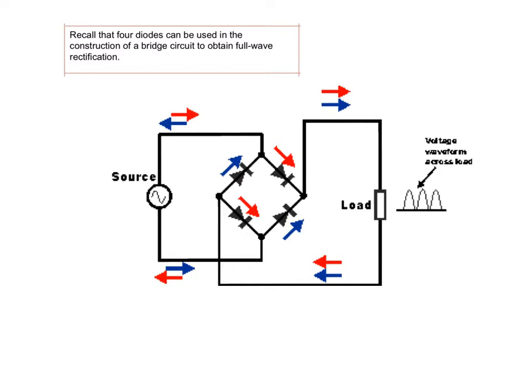Full wave rectification just means converting from AC to DC. The construction of the bridge is this section in the circuit here. You can see the four diodes. You need to be aware of how they're set up — look at how they're organised and the pattern that they're in.